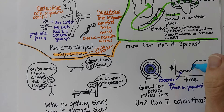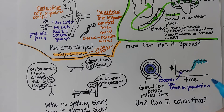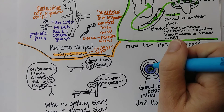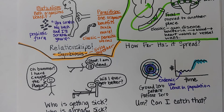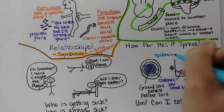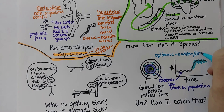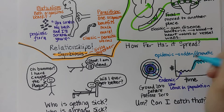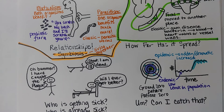An epidemic is a sudden increase — or not always sudden, but a dramatic increase — above the normal endemic level. For example, they often talk about obesity being an epidemic: it didn't come on overnight, but it certainly has had a dramatic increase.